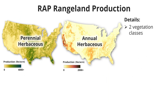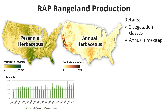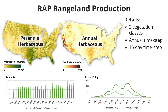Before we get started, I want to talk about the rangeland production data set within RAP that this tool leverages. This data set provides maps of perennial herbaceous production and annual herbaceous production at an annual time step and every 16 days. This allows you to look at production on a year-to-year basis and also to see within a given year when production occurred — whether it was early, late, or otherwise.